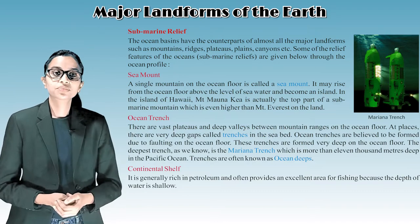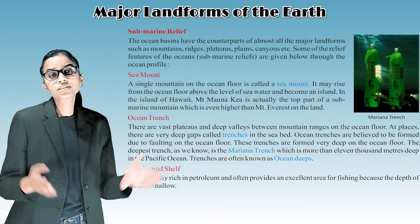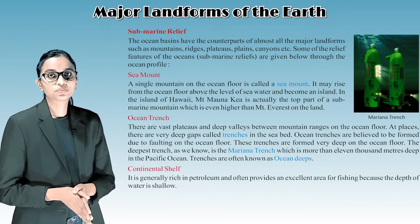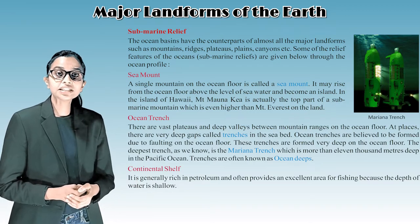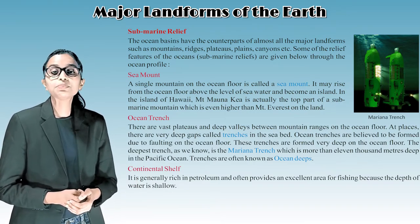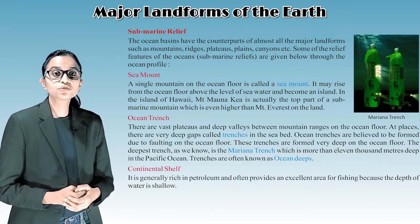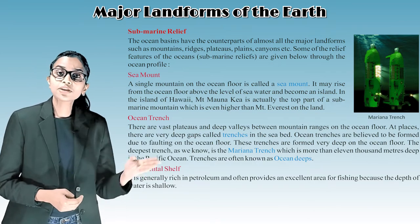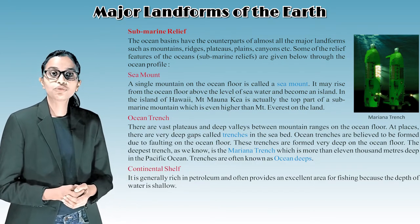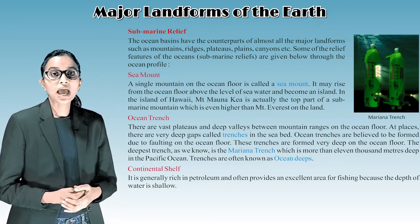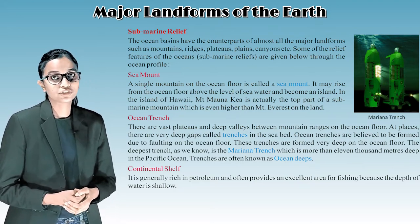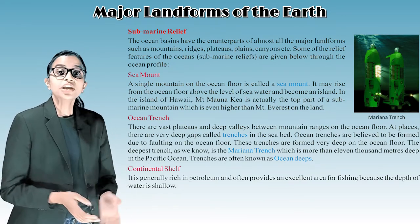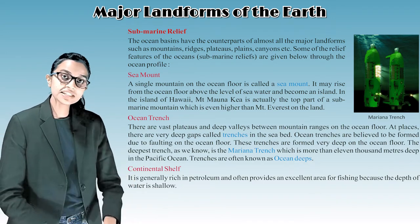Ocean trench: there are vast plateaus and deep valleys between mountain ranges on the ocean floor. At places, there are very deep gaps called trenches in the seabed. Ocean trenches are believed to be formed due to faulting on the ocean floor. The deepest trench is the Mariana Trench, which is more than 11,000 meters deep in the Pacific Ocean. Trenches are often known as ocean deeps.